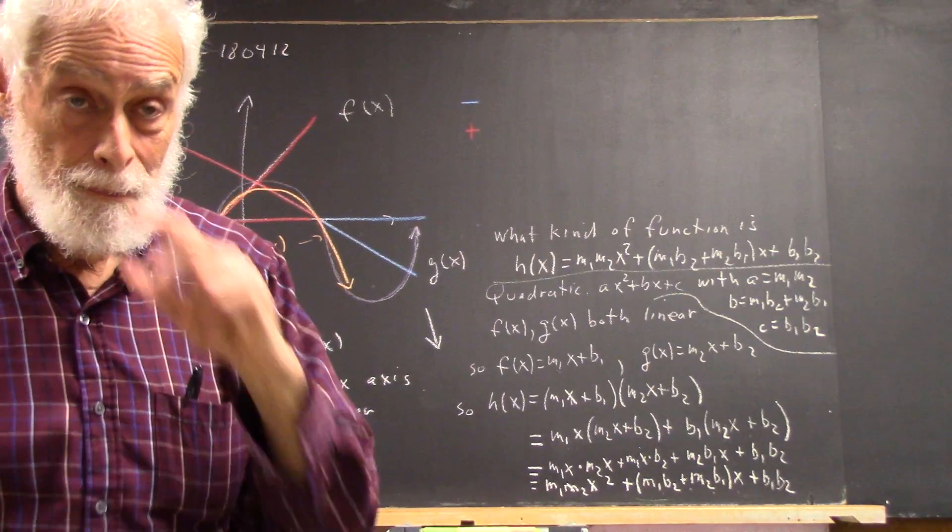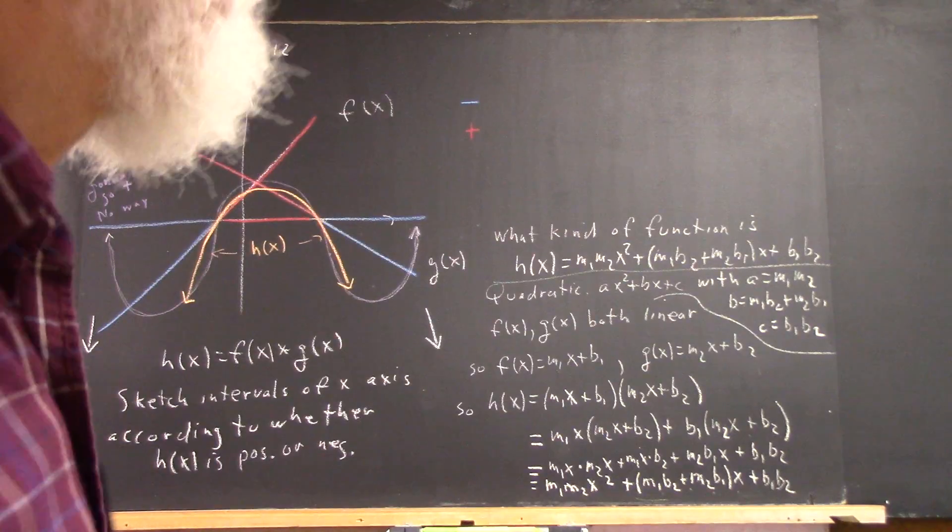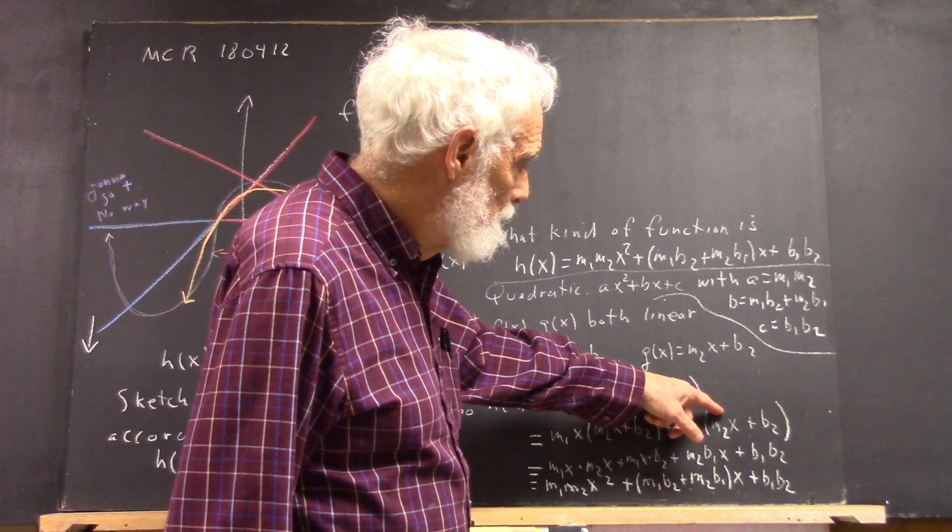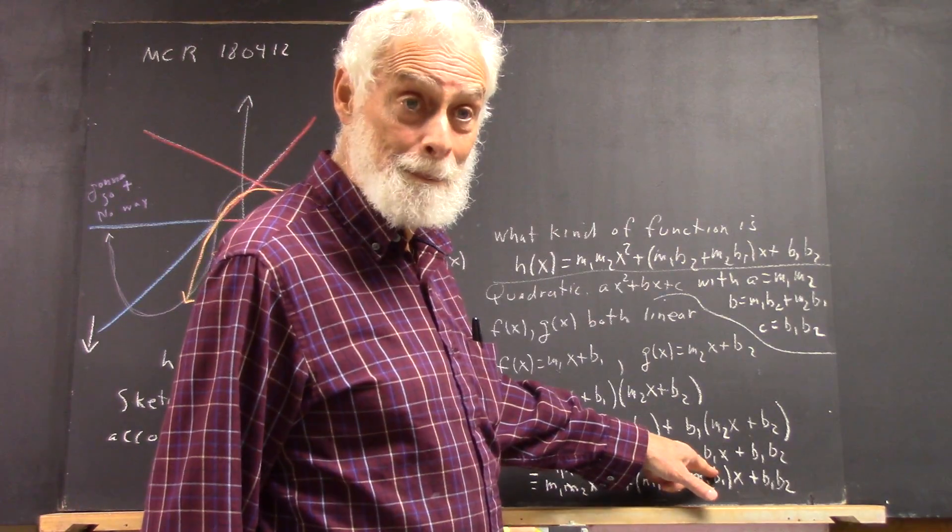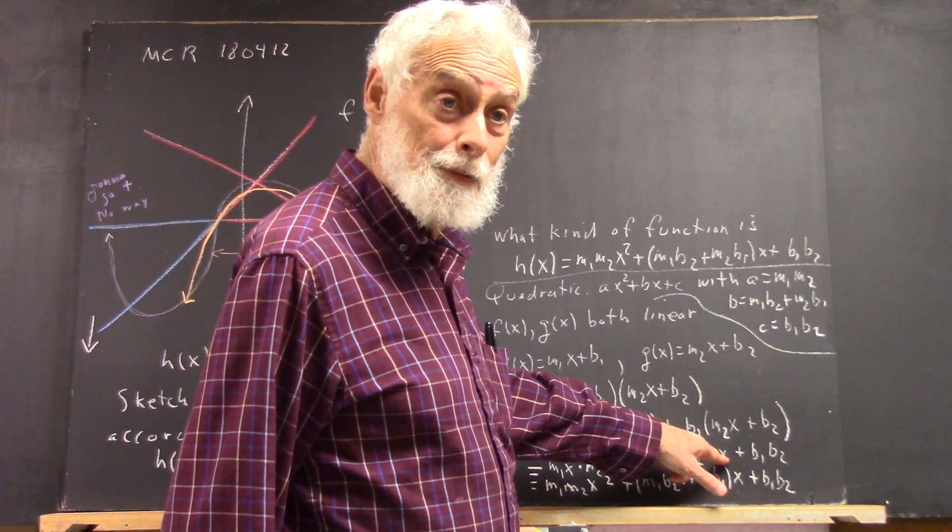It shouldn't be b1 times m2x? It is. Okay? Because b1 times m2 is the same as m2 times b1. And you just put the x. Yeah. And then you got the x. Okay?